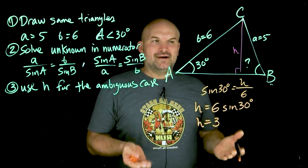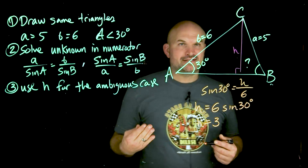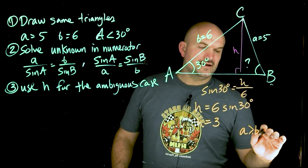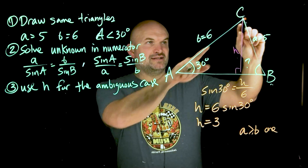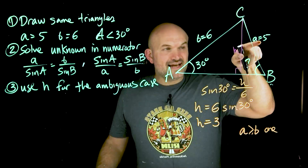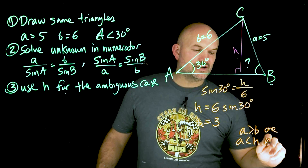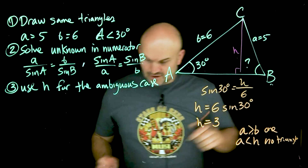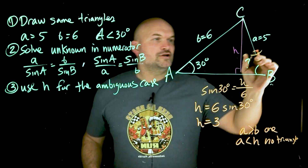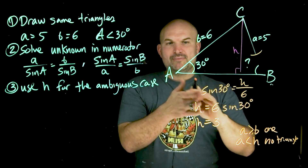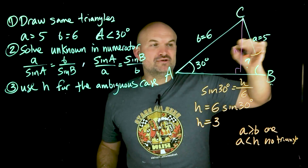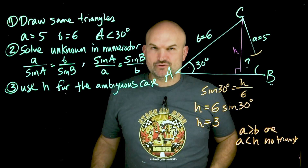How can we use the value of h to identify the two situations? Here's how I like to visualize it. If a is greater than b, you're going to have one case, because if a is so large it's always going to create one triangle and never the two-case scenario. Conversely, if a is less than h, you're going to have no triangle — because if a is so small, no matter how much you rotate it around, it's never going to create a triangle, since this 30-degree angle is fixed and a won't be long enough to intersect with line b.